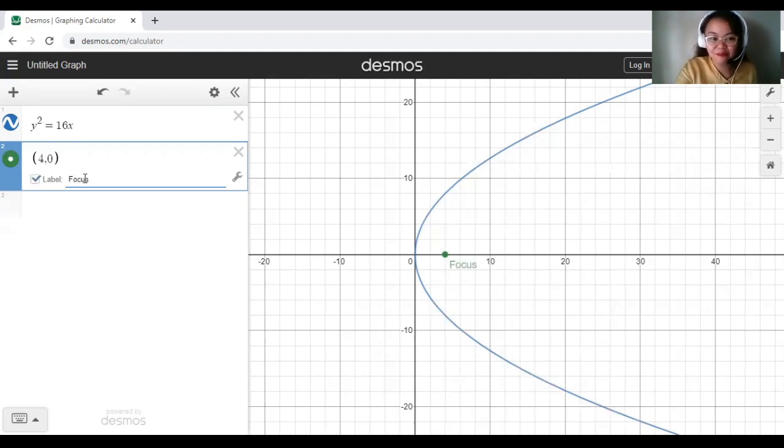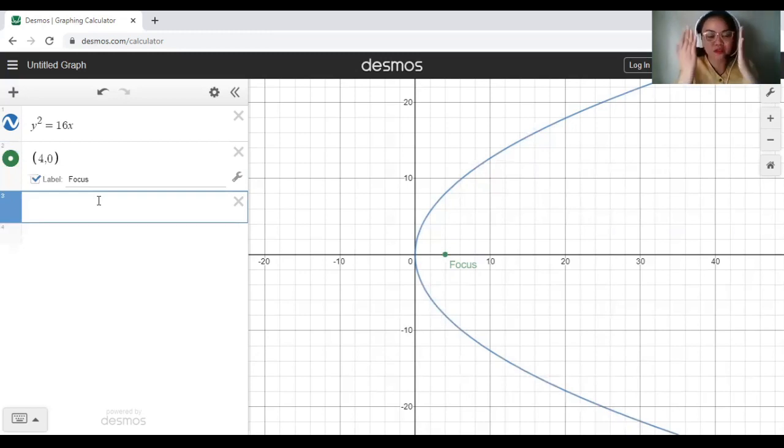Now that we have the measurement for the focus, we could have our directrix. For the directrix, you just get the reverse of our focus or the opposite sign and then also the opposite sign for our standard form of equation. That means our directrix now would be x = -4.